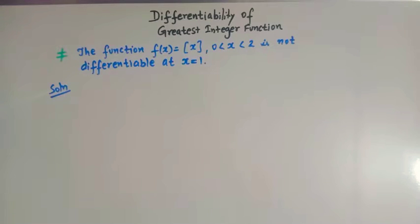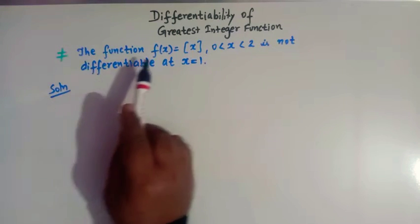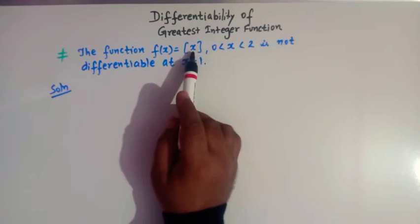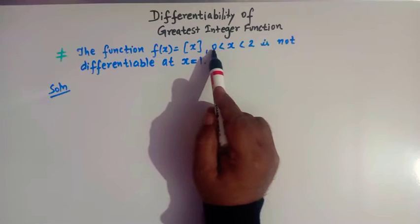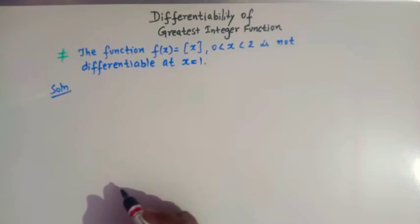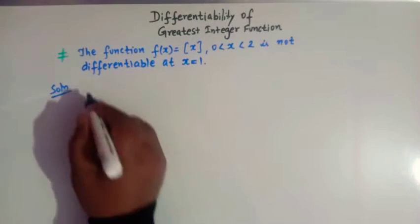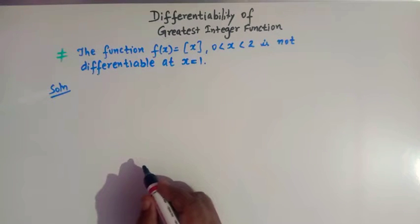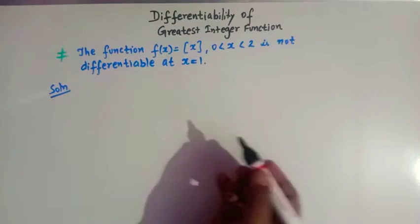Hello viewers. In today's class we are going to take up the differentiability of the greatest integer function. We are going to take up one problem: the function f(x) = greatest integer of x, where x lies between 0 and 2, is not differentiable at x = 1. We know that the greatest integer function is not a differentiable function, so let us prove it.